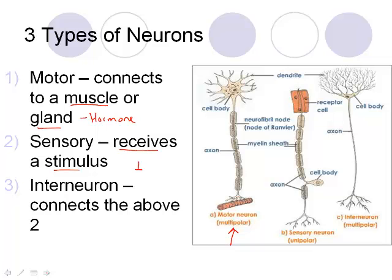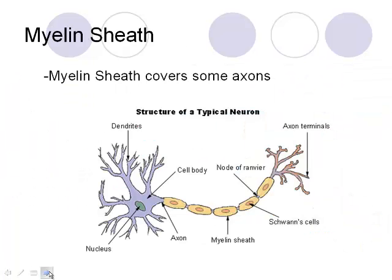If you put your finger on a tack, it hurts, and the sensory neuron sends that message from the sensory spot up to the brain so you can respond to it. Finally, the interneuron connects motor neurons and sensory neurons — we'll talk more about that in a moment.